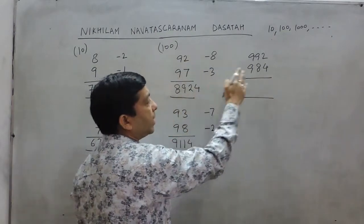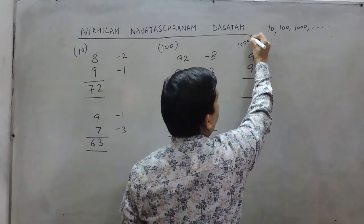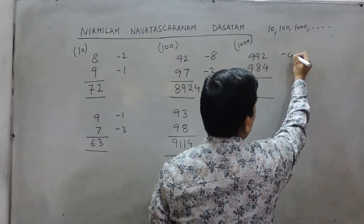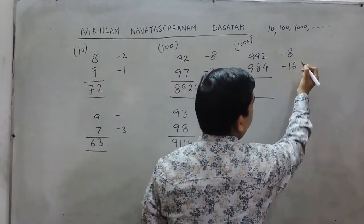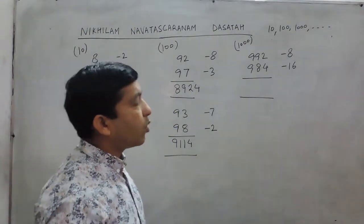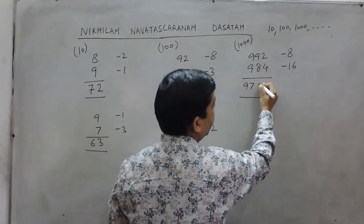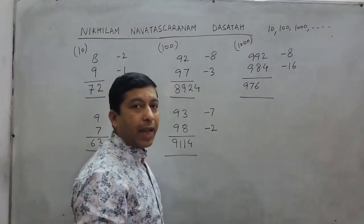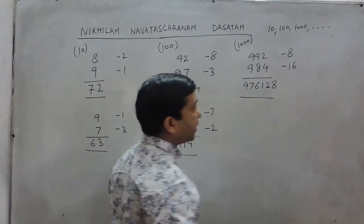Now we take another example where instead of 2-digit numbers, there are 3-digit numbers near to 1000. Here we take the base as 1000. The difference of 1000 and 992 is 8, and the difference of 1000 and 984 is 16. Here 8 and 16 sum to 24. If we subtract 24 from 1000, it becomes 976. These are the first 3 digits of the answer. Now 16 multiplied by 8 is 128, so 128 are the last 3 digits.